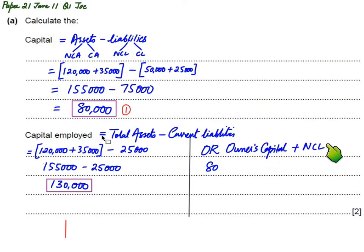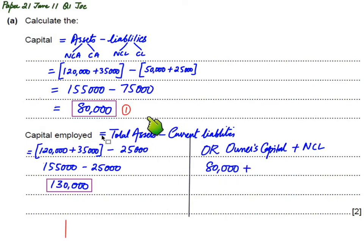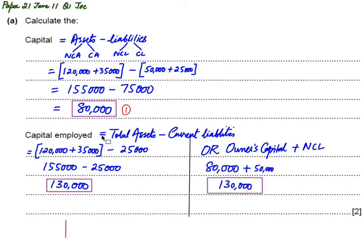Using the second formula — owners capital plus non-current liabilities — owners capital is 80,000 (already calculated) and non-current liabilities (due after more than one year) are 50,000. Adding these together gives capital employed of 130,000, confirming the same result as the first method.